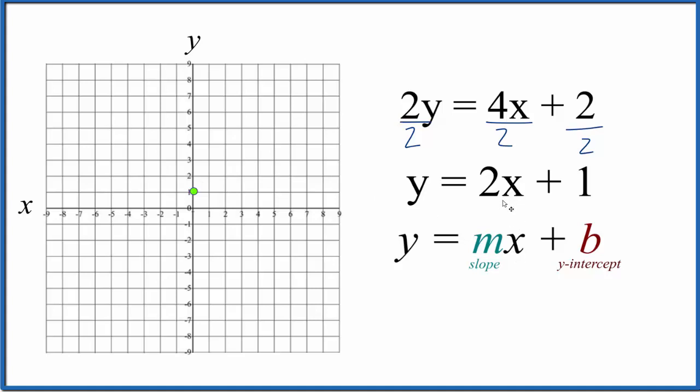For the slope, we have 2, but it's helpful to think of it as 2 over 1. That gives us rise over run. So we go to our y-intercept, and we rise 1, 2, we go over 1. And we can just keep doing this. Rise 1, 2, and go over 1.